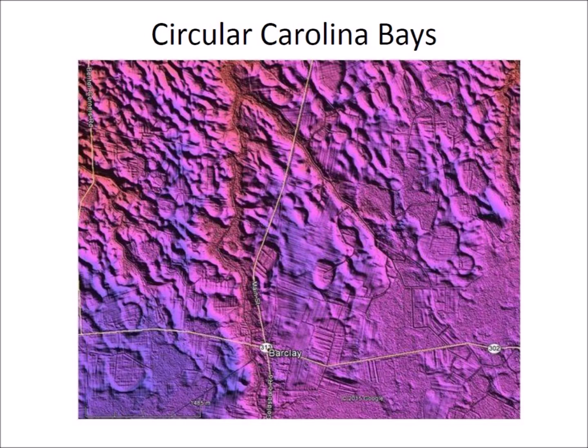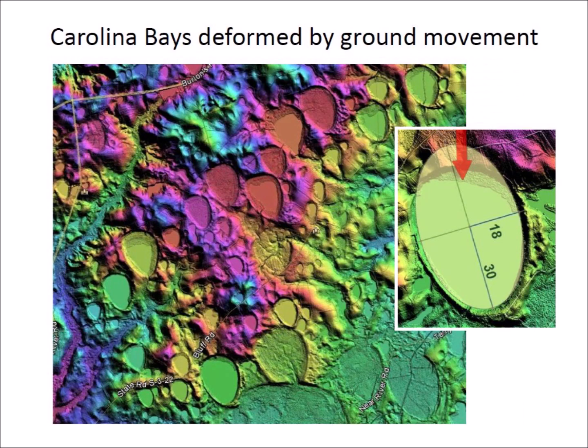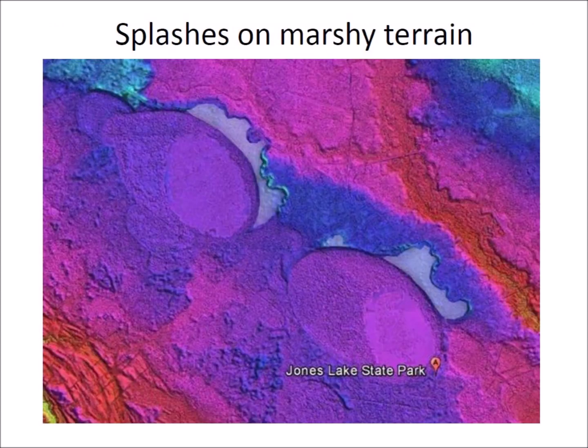Impacts on ground that did not have enough depth upon consolidated ground to allow the formation of conical cavities produced circular bays such as those found in the Delmarva Peninsula. Impacts on inclined terrain caused the liquefied soil to flow downhill after the formation of the conical cavity. The uphill side of these Carolina Bays was distorted by the mud flow. The impacts of ice boulders on marshes and wetlands produced splashes of sandy soil that created deposits around the margins of the elliptical bays.